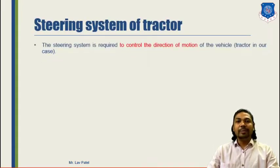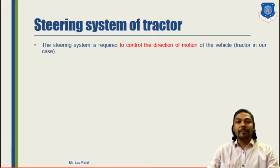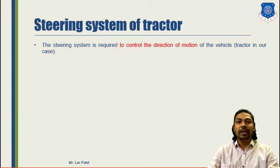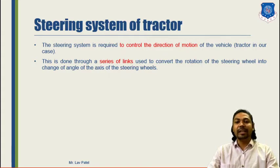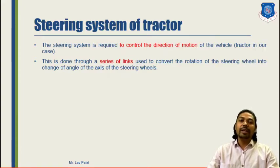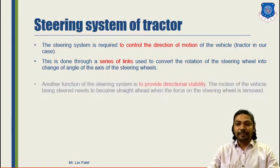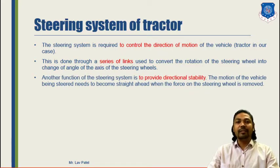Let us begin with the first topic — the steering system of the tractor. The first and primary objective of the steering system is to control the direction of motion. For that, we use a series of links with gears and levers, and by combining these systems we create the overall steering that can be applied to either front or rear wheels. In the tractor's case, the steering system is mounted on the frontal wheels.